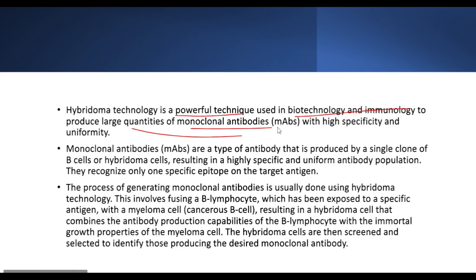Monoclonal antibodies are produced by a single clone of B-cells or hybridoma cells. Hybridoma cells are one clone — they are pure. In this video we learn about hybrid cells, which are a combination of B-cells and myeloma cells. B-cells are B-lymphocytes, and myeloma cells are cancer cells. These two have special properties combined in hybridoma technology.